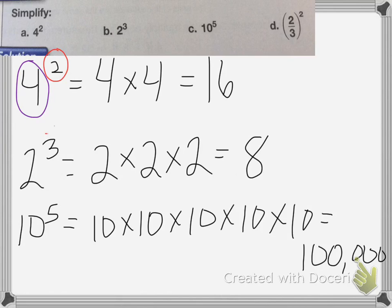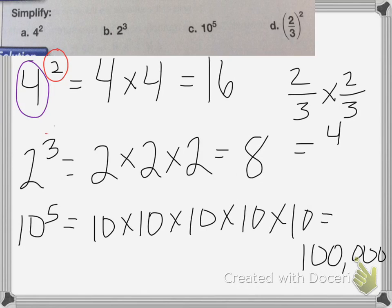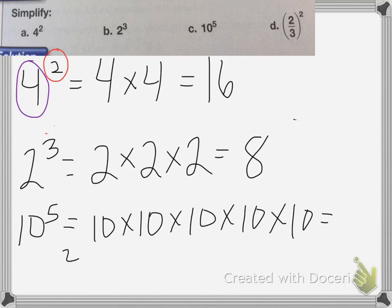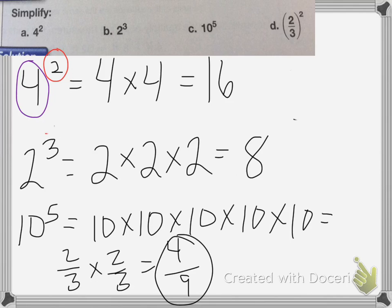For part D, we have 2/3 squared. So 2/3 squared is 2/3 times 2/3. 2 times 2 is 4, and 3 times 3 is 9, so my answer is 4/9.